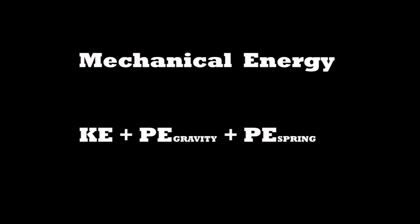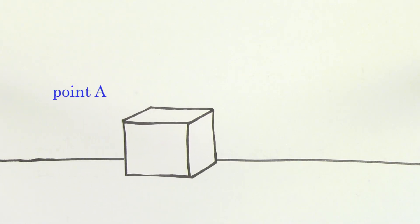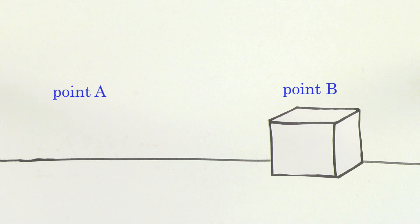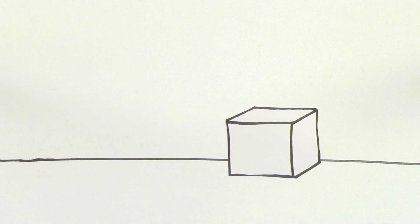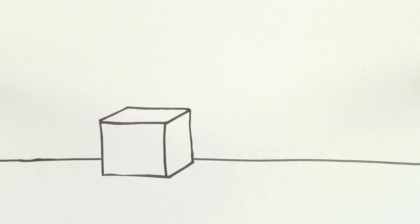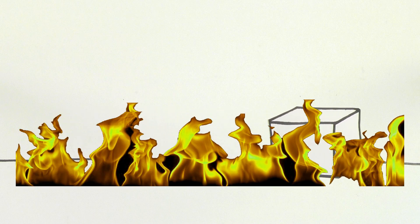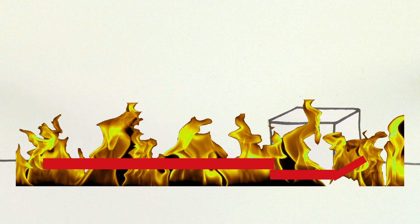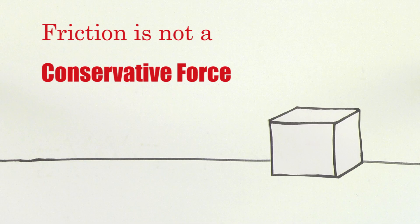An example of a non-conservative force is friction. If I move a mass along a table from point A to point B, friction does a certain amount of negative work on the mass, which creates some thermal energy. If instead of going straight from A to B, I make the block go from A to B back to A over and over again, the work done by friction will become larger and larger and it'll generate more and more thermal energy. Because the work done by friction depends on the path taken, friction is not a conservative force.